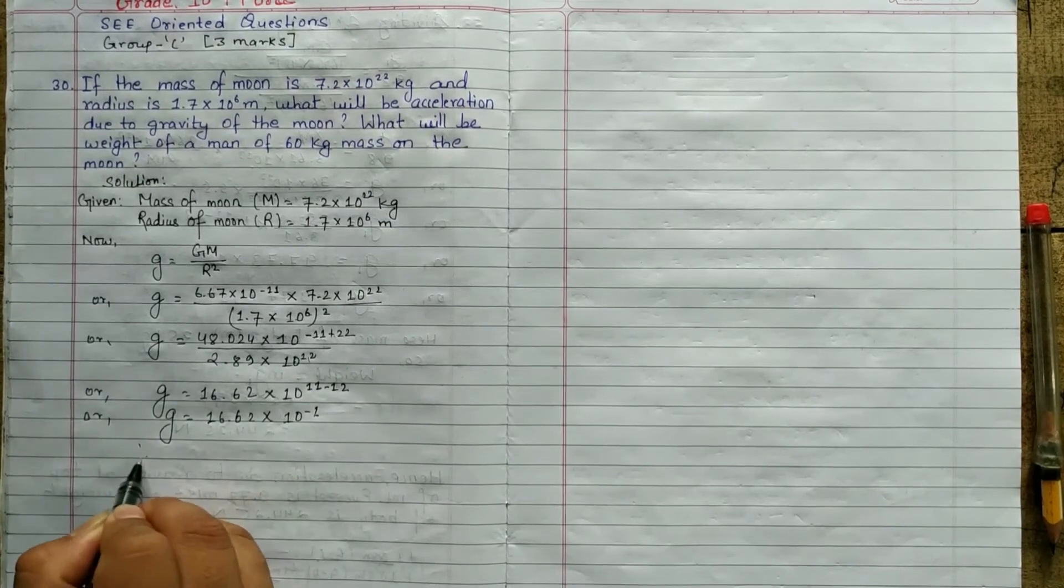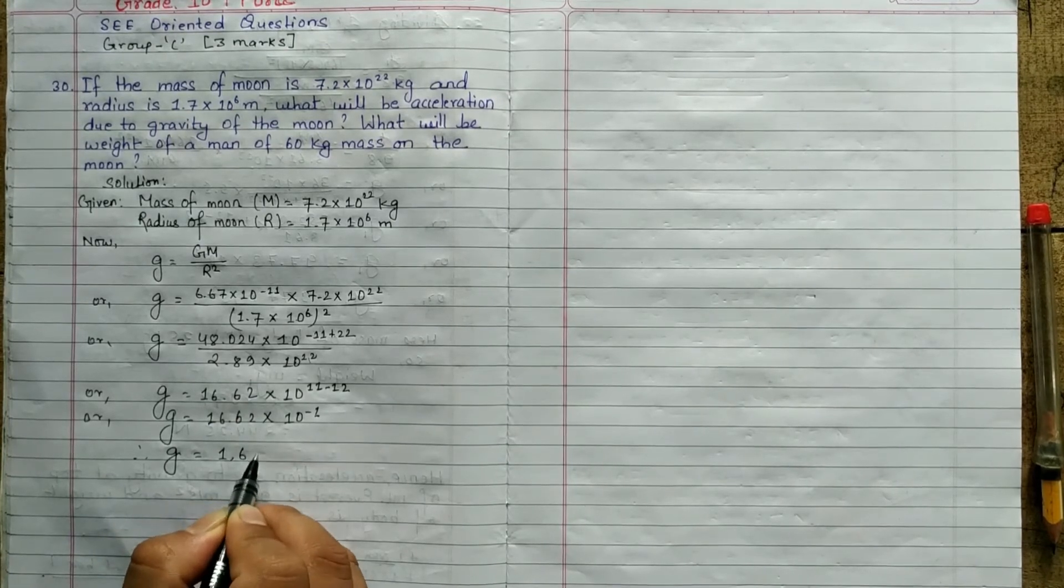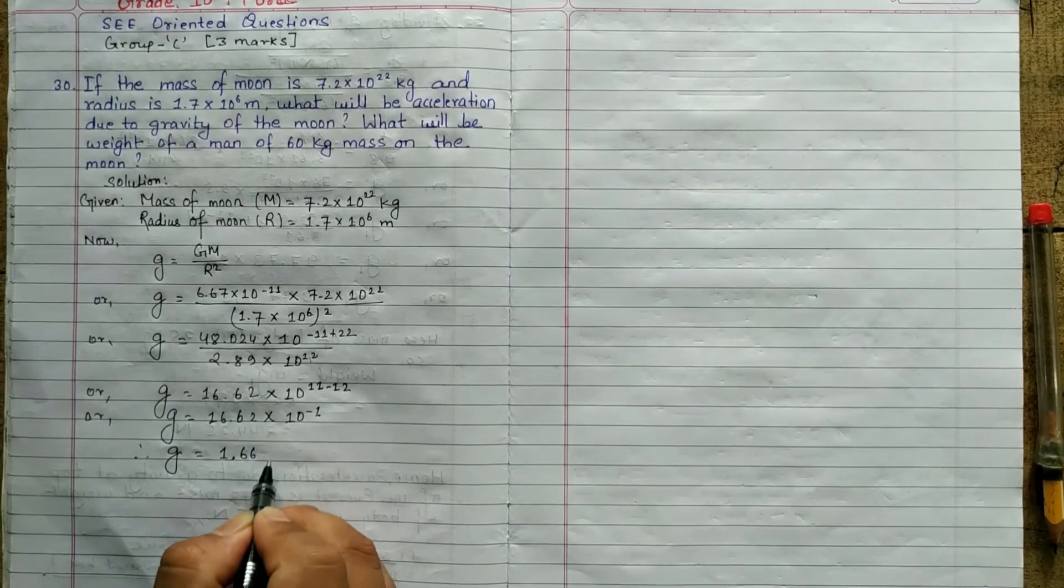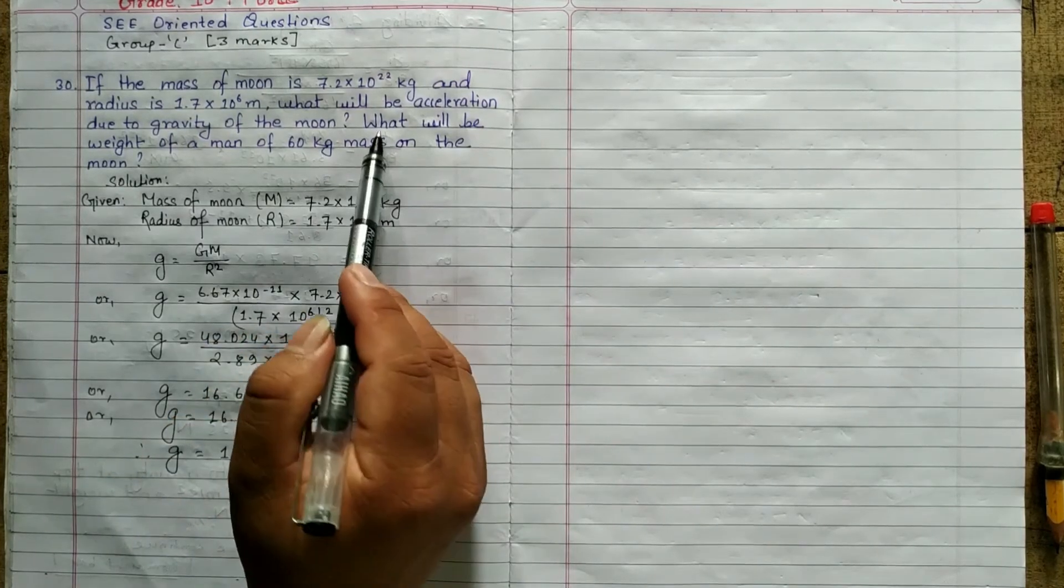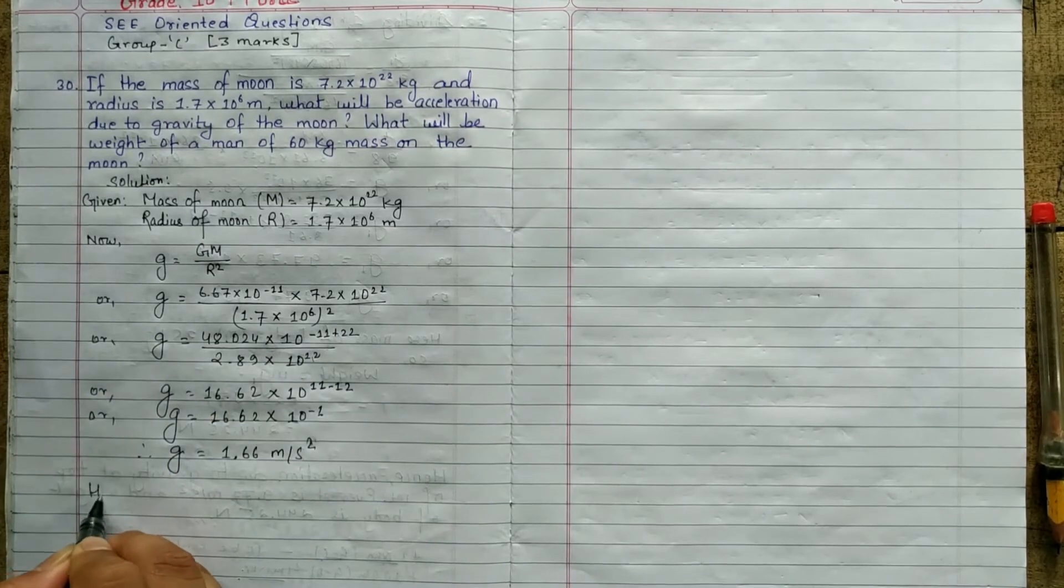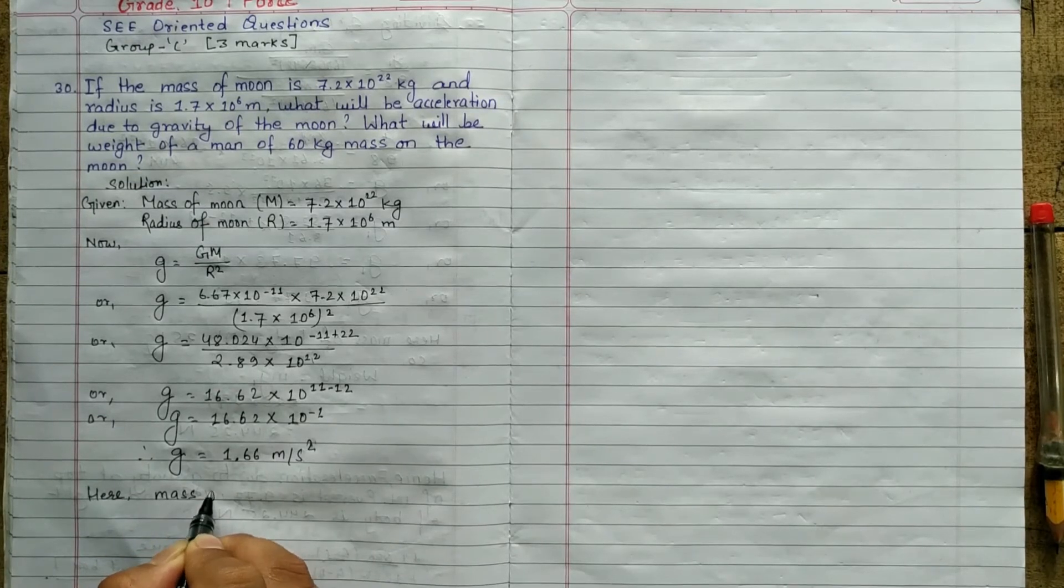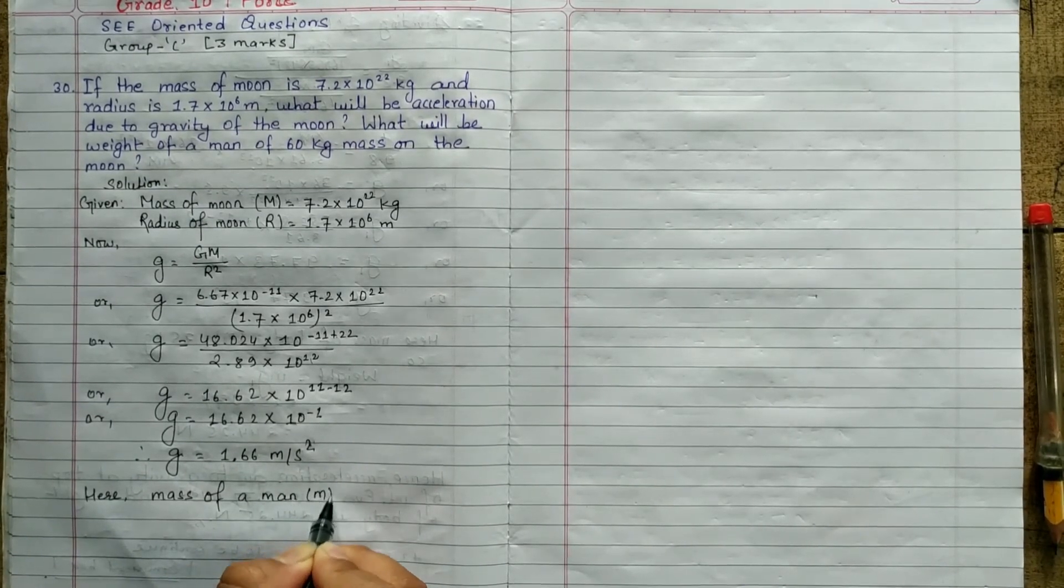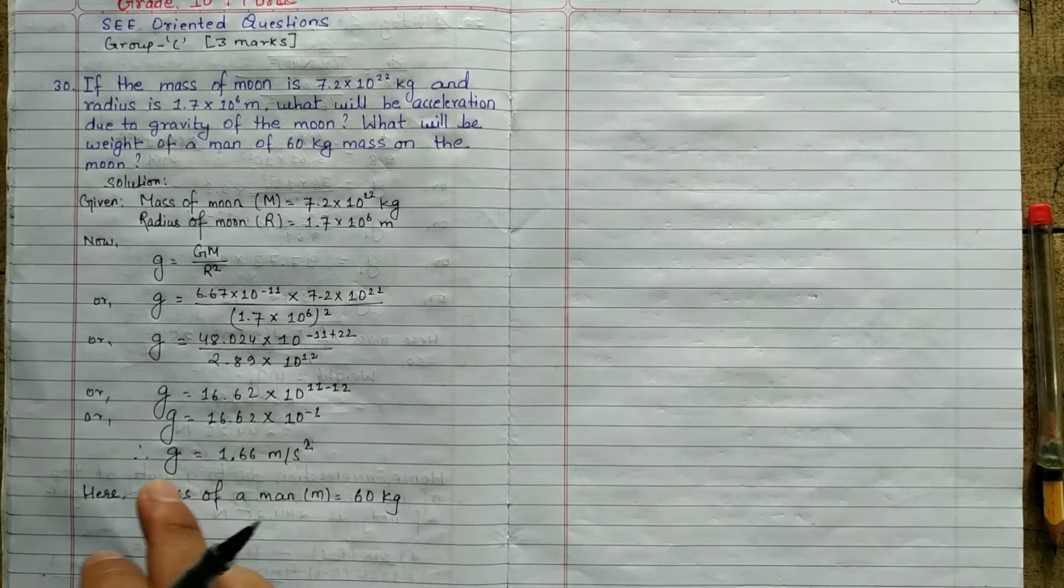Or, g equals to 16.62 into 10 to the power minus 1 is 1.66 meter per second square. What will be the weight of a man of 60 kg mass on the moon?